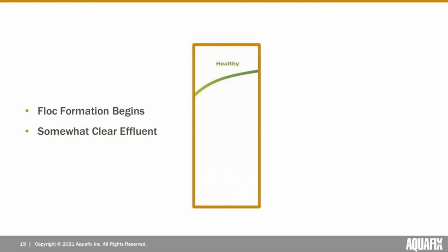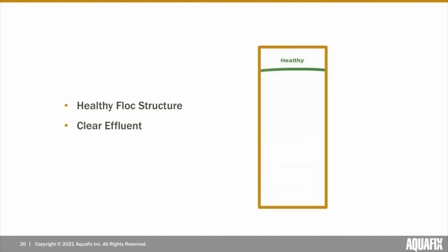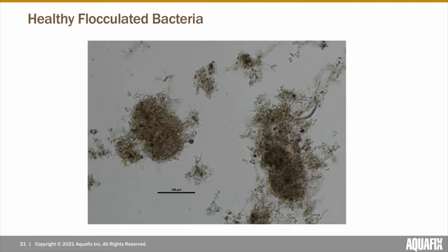Bacteria are now able to begin settling and creating a less turbid effluent. Once we reach a healthier sludge age, ideal flock formation will occur, resulting in efficient settling and a clear effluent. Here's an example of what some healthy flocculated bacteria look like — the flock are variable shapes and sizes, and minimal free bacteria is present. After looking at the size and shape of flock, we will further analyze how well oxygen is penetrating into flock, as well as the strength of flock structures.